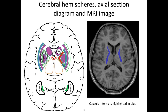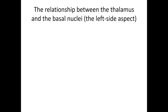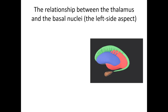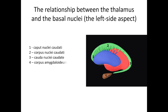The question is: where is the amygdala? Let's try to find it. Let's look at the relationship between the thalamus and the basal nuclei from the left side. Number 1 is caput nuclei caudati. Number 2 is corpus nuclei caudati. Number 3 is cauda nuclei caudati. Number 4 is the amygdala, or corpus amygdaloideum. We have already found it. Number 5 is the thalamus, and number 6 is nucleus lentiformis.